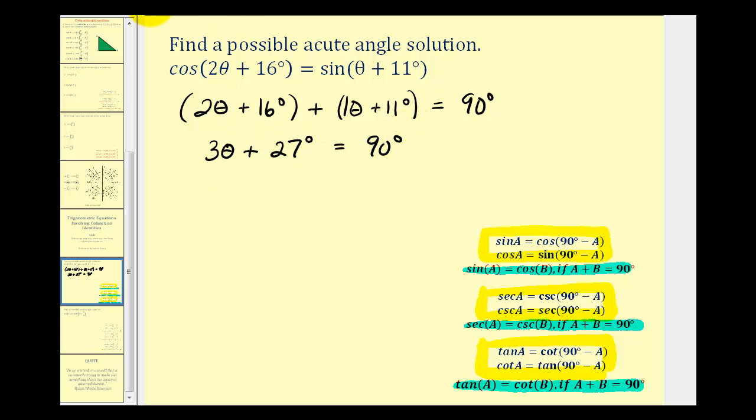So now we'll solve for theta. We'll start by subtracting 27 on both sides of the equation or 27 degrees. So now we have three theta equals 63 degrees. Now divide both sides by three. We have theta equals 63 degrees divided by three is equal to 21 degrees. And this would be one possible acute angle solution to the given equation.